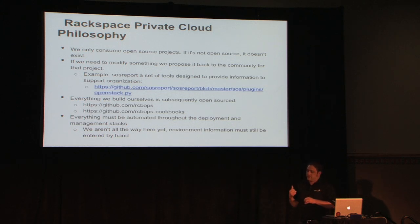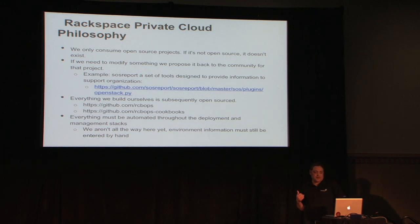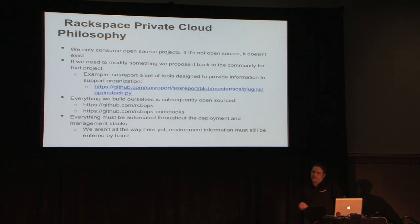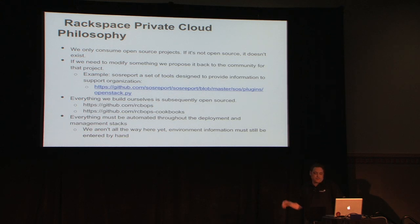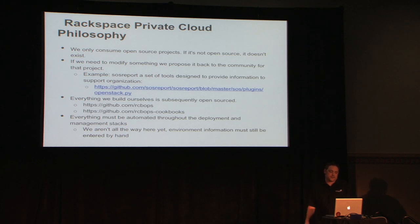Everything we do is open source by default. We haven't had a good reason to not open source something so far, and we've been able to interact much better with the OpenStack community by taking this approach. It also gives other people the opportunity to look at what we're doing and tell us where we need to adjust or where we're doing well. You can see two GitHub repositories: RCBOPS, which has all of our OpenCenter stuff, and RCBOPS Cookbooks, which has all of our Chef Cookbooks.